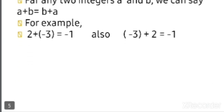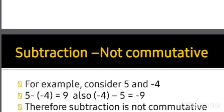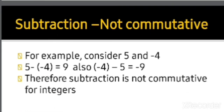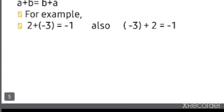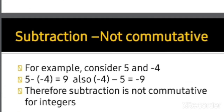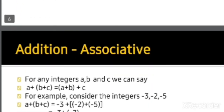Subtraction is not commutative. Not commutative means a minus b is not equal to b minus a. For example, consider 5 and minus 4: 5 minus minus 4 equals 9, but minus 4 minus 5 equals minus 9. The signs are different and the numbers are different, so subtraction is not commutative for integers.